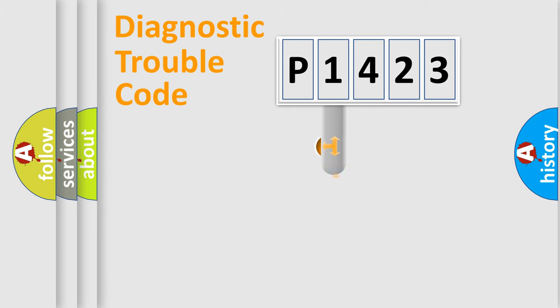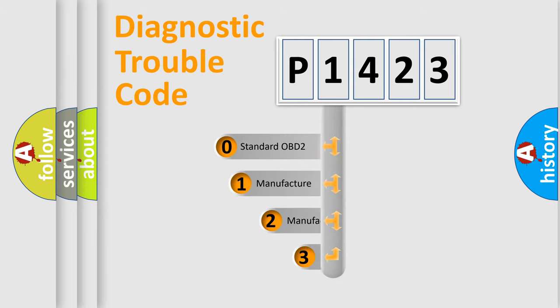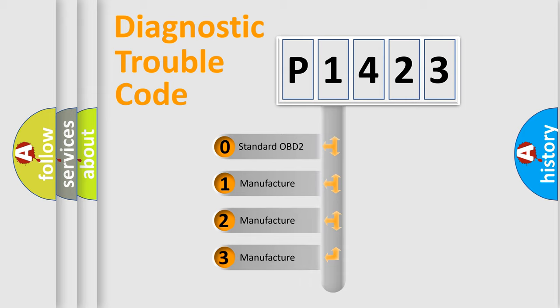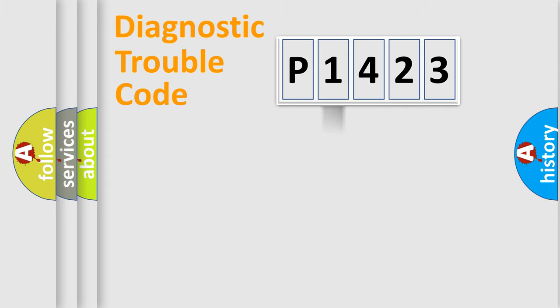This distribution is defined in the first character code. If the second character is expressed as zero, it is a standardized error. In the case of numbers 1, 2, or 3, it is a more specific expression of the car-specific error.